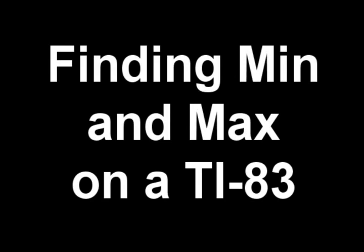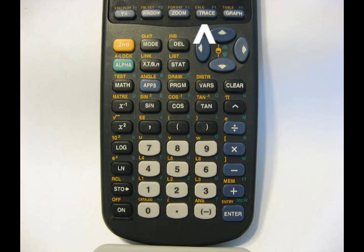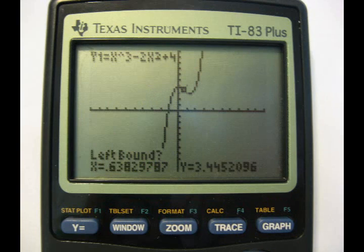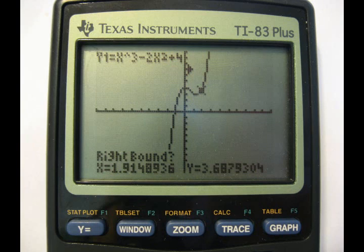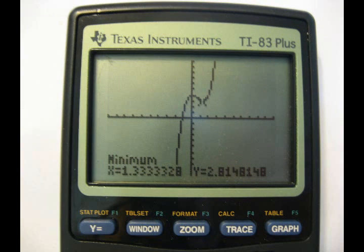Find a minimum. You have to graph your graph. Then you go second, trace, which will be calc. It will say calculate menu, and then you press 3 to get minimum. Wherever your minimum is going to be, you go left bound, press enter, and then go to the right of the point. It will say right bound, press enter, and then it will say guess, press enter, and that will give you your minimum value.